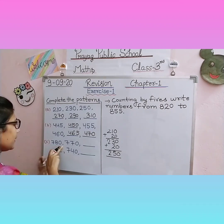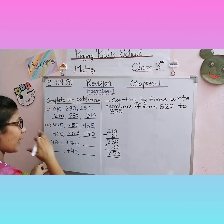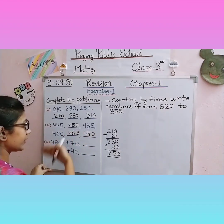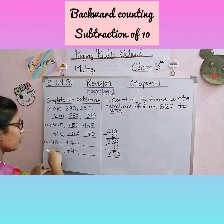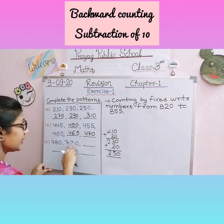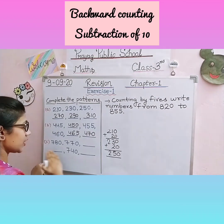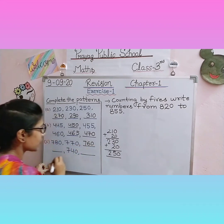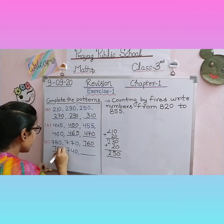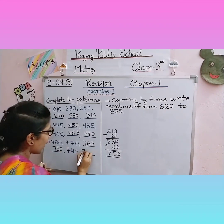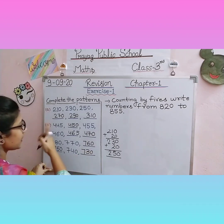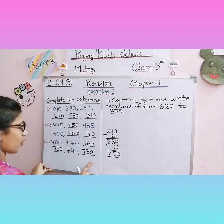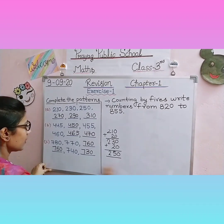Next series: seven hundred eighty, seven hundred seventy, blank, blank, seven hundred forty, blank. It is not necessary to fill patterns only by forward counting — we can also fill by backward counting. The difference between seven hundred eighty and seven hundred seventy is ten. When you subtract ten from eighty you get seventy — so we subtract ten each time. Seven hundred seventy minus ten: seven hundred sixty. Seven hundred sixty minus ten: seven hundred fifty. Seven hundred fifty minus ten: seven hundred forty. Seven hundred forty minus ten: seven hundred thirty. If you have trouble with direct counting, do rough work — add and subtract carefully, then complete the pattern.